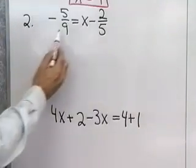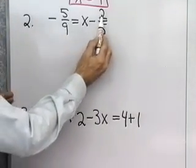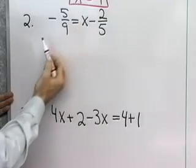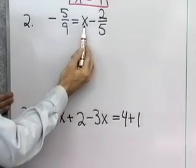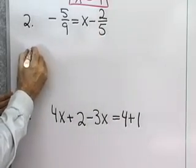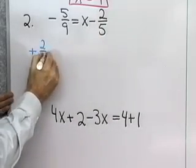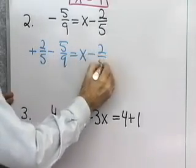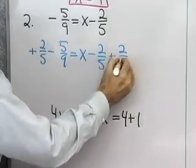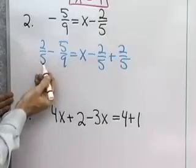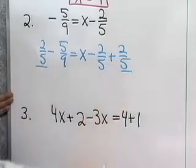Here's another one. Negative 5 ninths is equal to x minus 2 fifths. I can have x on the right side of the equation just as well as on the left side. So to solve this for x, what I need to do is get rid of the negative 2 fifths. So I'll add positive 2 fifths to both sides. So here I added it on the outside. I guess I don't need that plus sign. So I added 2 fifths to both sides of this equation.